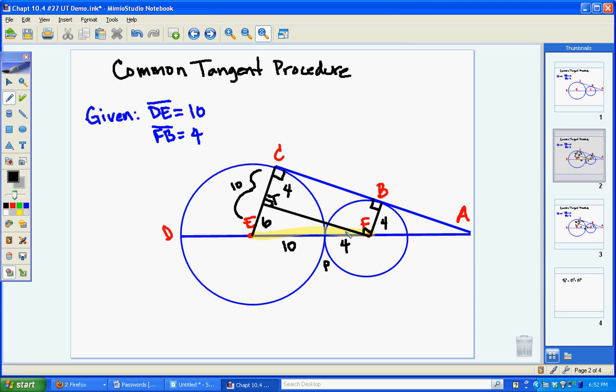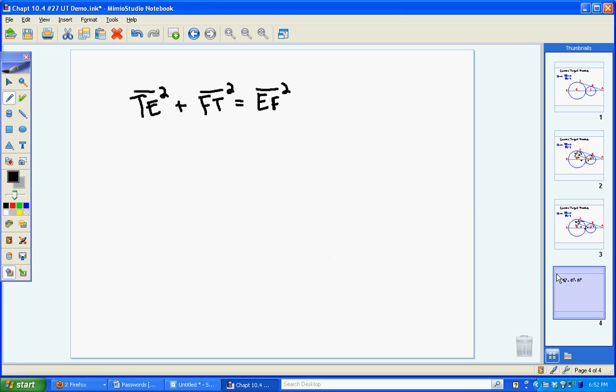So now all I'm left with is to figure out what the length of TE is, sorry TF, because I know that the distance from T to F is the same as the distance from C to B. So my next step is to enter the values for TE, EF and then to figure out what FT is.